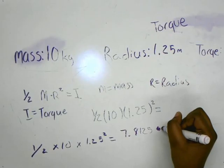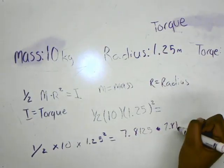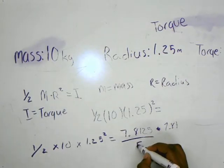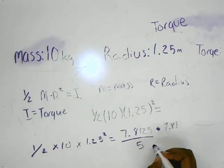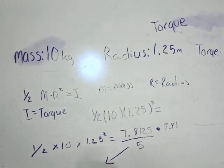Then you divide this number by 5, and you should get, and the answer you should get is right there. And then you should get 1.5625. And that should be your final answer.